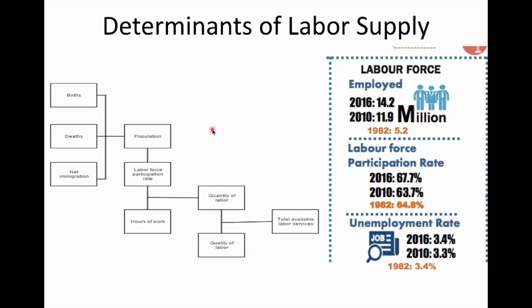The following is a chart showing some concepts related to the determinants of labor supply. I have explained in the last discussion the idea leading to the last box here — the total available labor services in the economy, which is what we call the workforce. The workforce in the labor market is ready and available.